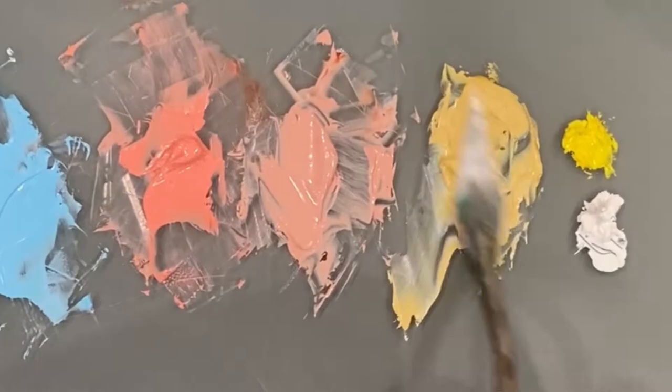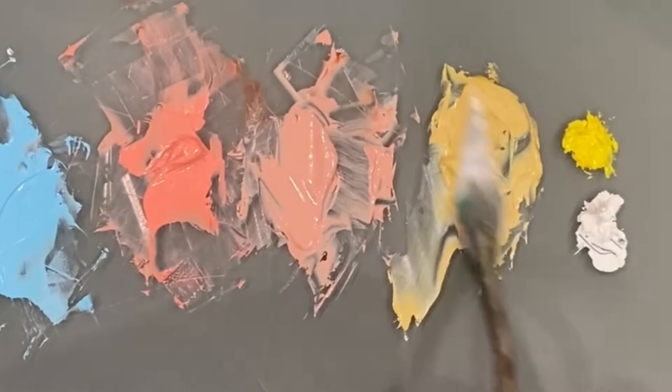The higher the tinting strength, the less a color changes when you add white. The lower the tinting strength, the more white you'll need to add to change its color.